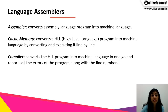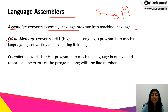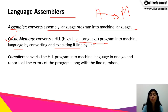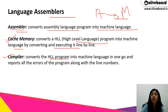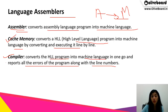Assemblers are used to transfer assembly level language to machine level language. The next is the interpreter, which converts all high level language programs into machine language by converting and executing it line by line. The third is the compiler, which converts the high level language program into machine language all at once and reports all the errors along with line numbers. The compiler is better than the interpreter because the interpreter converts line by line, but the compiler does it in one go.